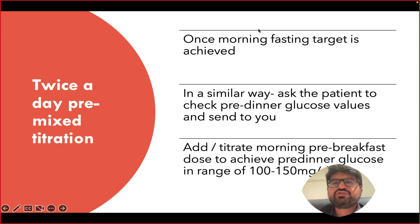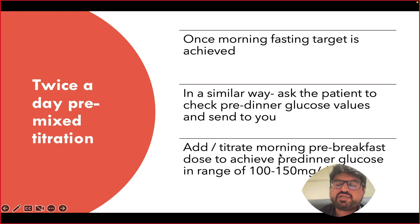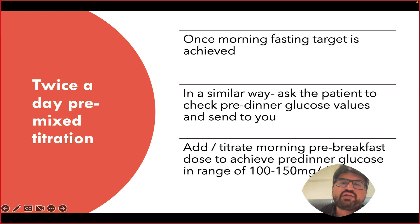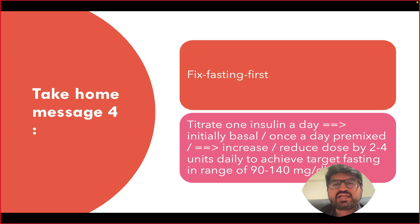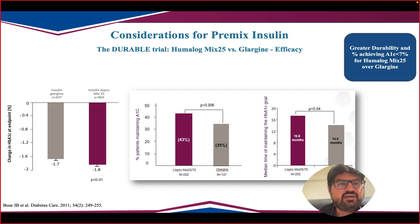Once the fasting target is achieved but HbA1c remains high, start checking pre-dinner sugar. You can then add premix insulin before breakfast and titrate it based on pre-dinner sugar levels, aiming for a pre-dinner target of 100–150 mg/dL. The key message: fix the fasting first with once-daily insulin, then add a morning dose if needed.